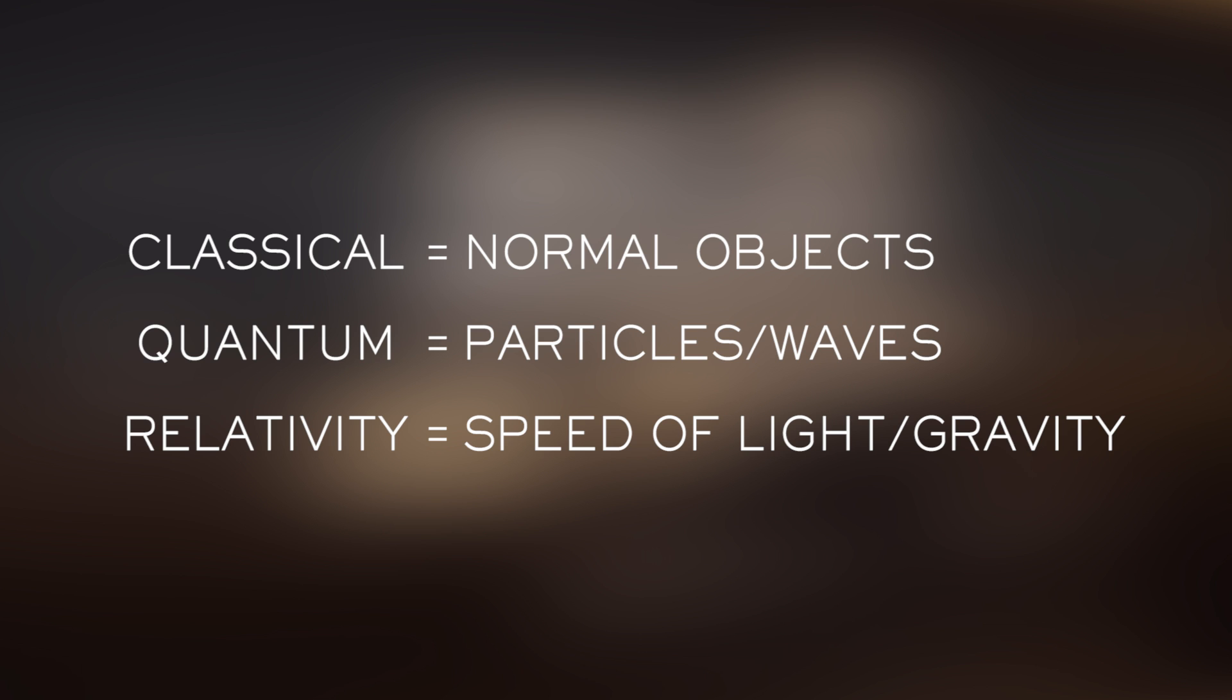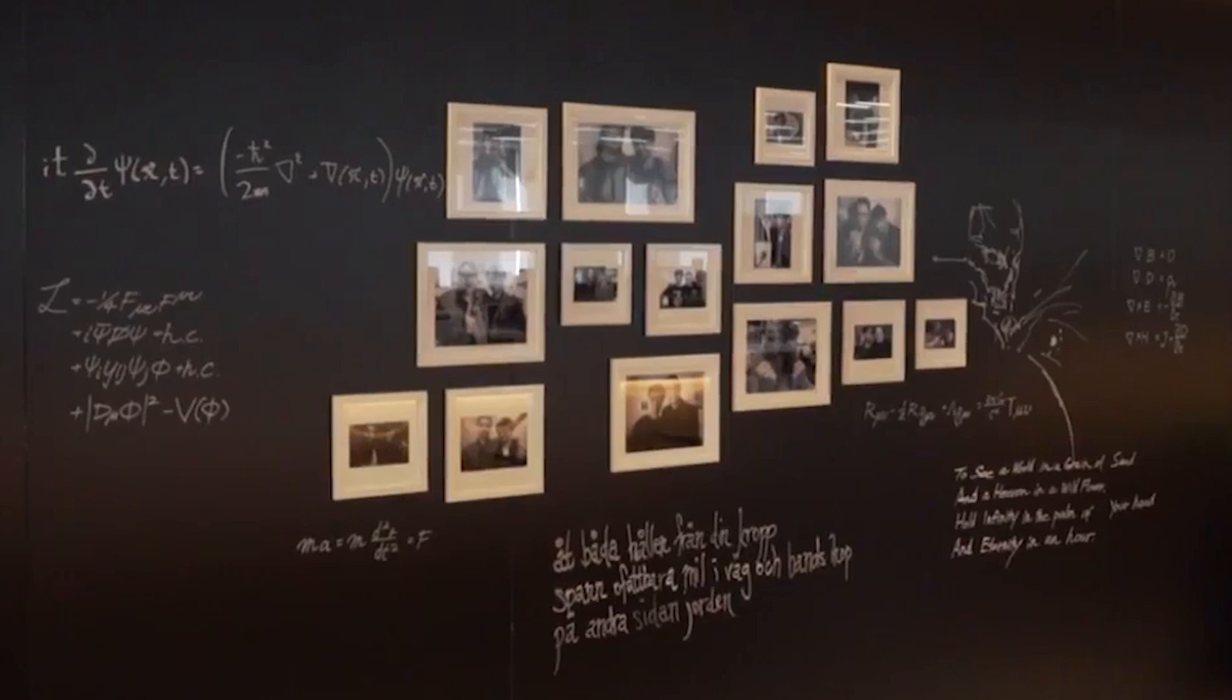And the term relative or relativity is often associated with concepts like the speed of light and gravity. So classical equals normal everyday objects, quantum equals particles and waves, and relative equals speed of light and gravity. Just keep that in mind. With that out of the way, I'd like to go through each of these equations one by one and try to explain what they are.